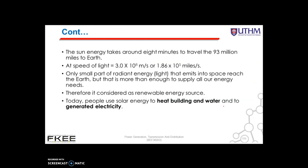The sun's energy takes around 8 minutes to travel the 93 million miles to the Earth, at the speed of light, which is 3×10⁸ meters per second or 1.86×10⁵ miles per second. Only a small part of the radiant energy emitted into space reaches the Earth, but that is more than enough to supply all our energy needs.